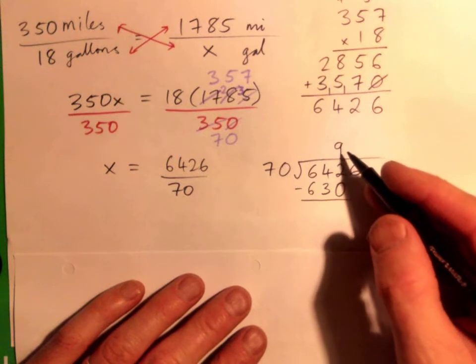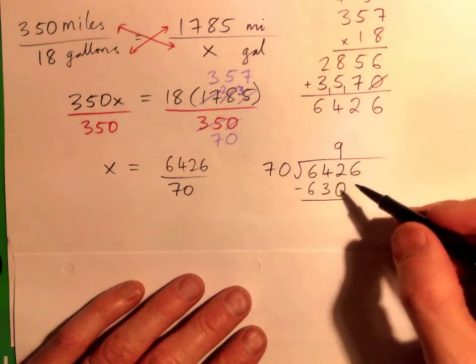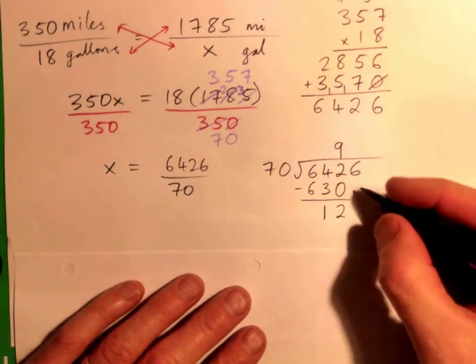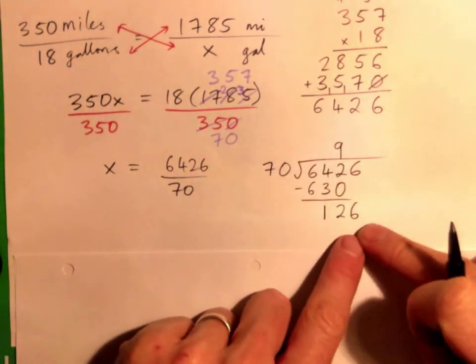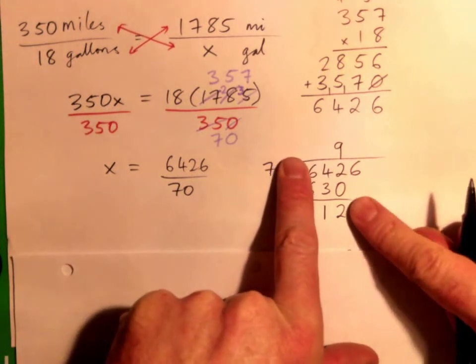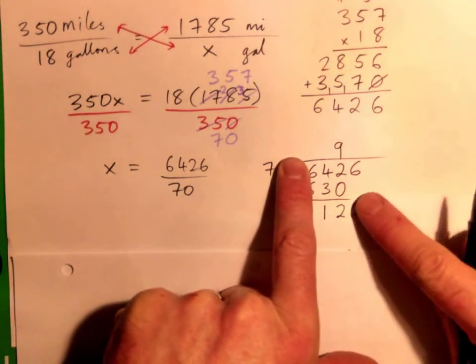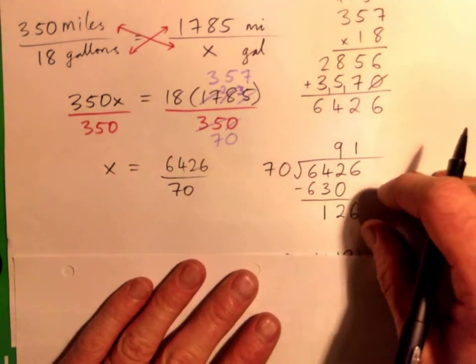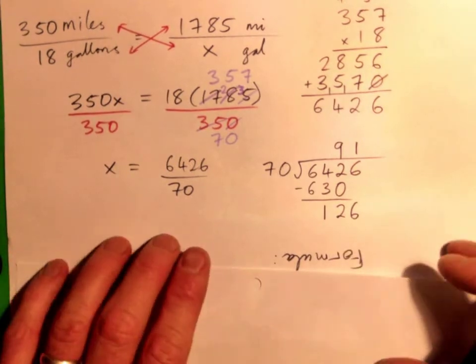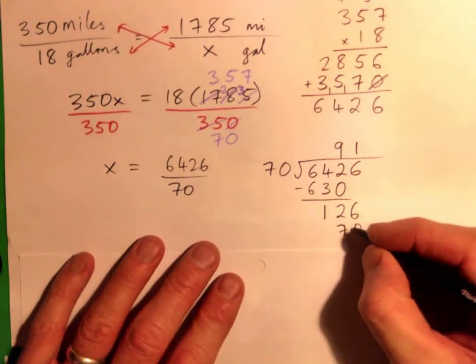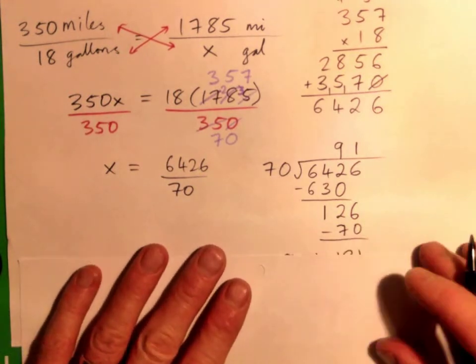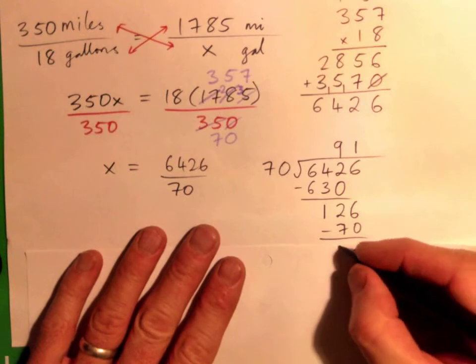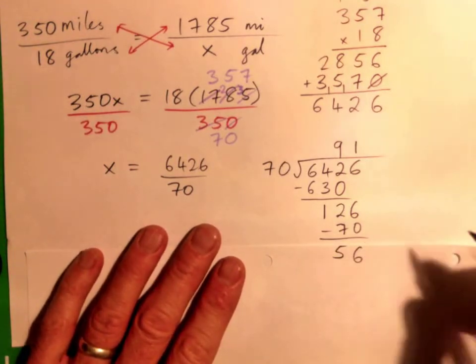So we have 2. 4 minus 3 is 1, good. And bring 6 down. So 70 into 136 is kind of like 7 into 13, so that's 1, good. So 1 times 70 is 70. And then subtract and we get 56.